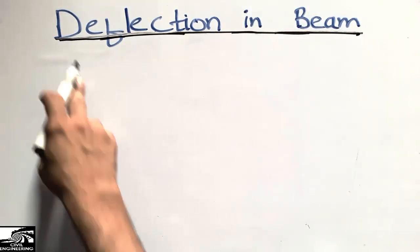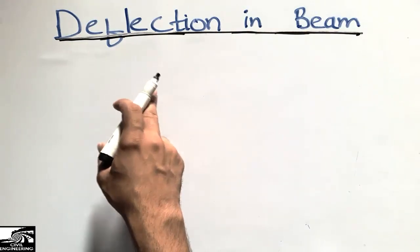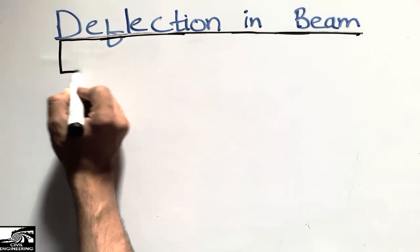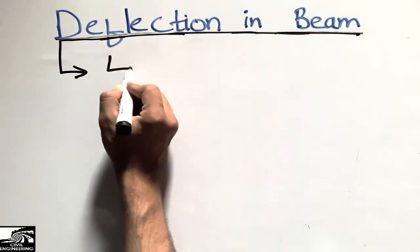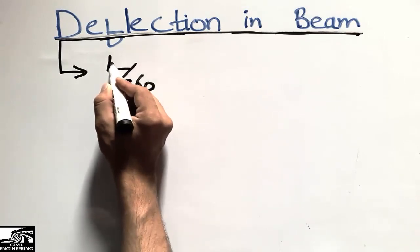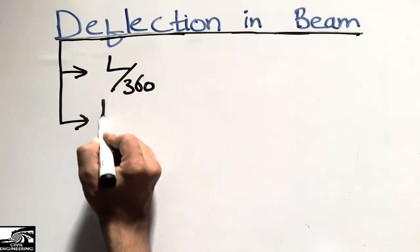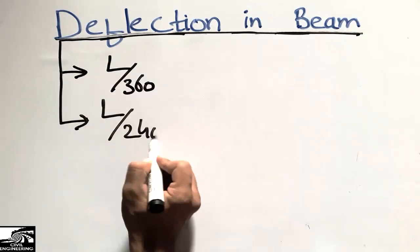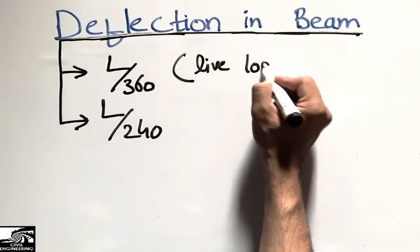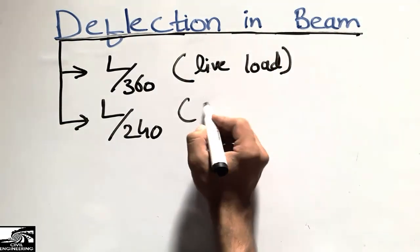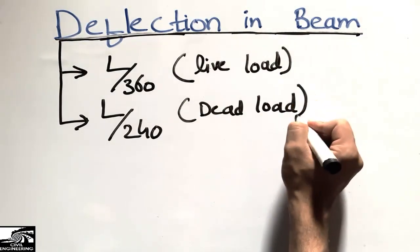First of all, I will mention the two types of deflection limits as per the American Concrete Institute. There are two types of deflection limits mentioned by the ACI: one is L/360, which applies to the span of the beam under live load, and the other is L/240, which applies to dead load deflection.